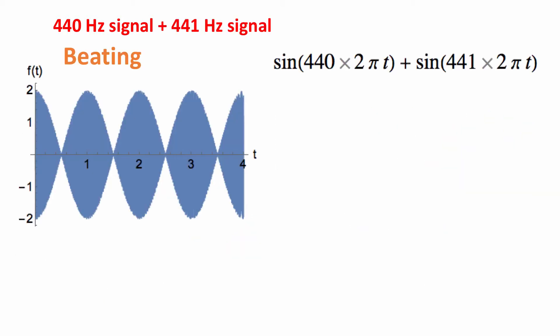But let's go on to combining the two. So if we add the two signals, so we have a 440 hertz signal and a 441 hertz signal, and if we play these at the same time we get constructive and destructive interference, and this results in beating, and that sounds something like this.